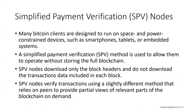Not all nodes have the ability to store the full blockchain. Many Bitcoin clients are designed to run on space and power-constrained devices such as smartphones, tablets, or embedded systems. For such devices, a simplified payment verification SPV method is used to allow them to operate without storing the full blockchain. These types of clients are called SPV clients or lightweight clients. As Bitcoin adoption increases, the SPV node is becoming the most common form of Bitcoin node, especially for Bitcoin wallets.